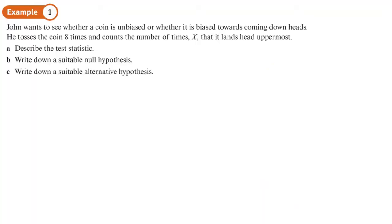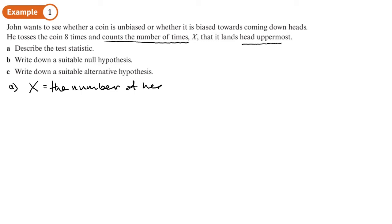John wants to see whether a coin is unbiased or biased towards coming down heads. He tosses the coin eight times and counts the number of times X that it lands heads up. Describe the test statistic. We normally use X for the test statistic — what is it we're actually counting? We're counting the number of times it lands on heads out of eight throws. So our test statistic X is the number of heads in eight throws — basically the thing you are counting.